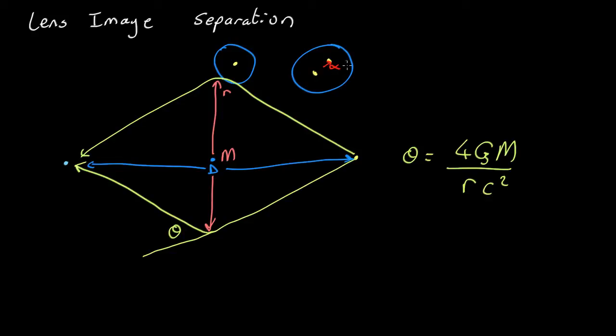is given by the equation theta equals 4gm over rc squared. So from that we want to measure this alpha here, which is this angle in there. Well, from symmetry, that's going to be theta as well here. So we know that alpha equals half theta.